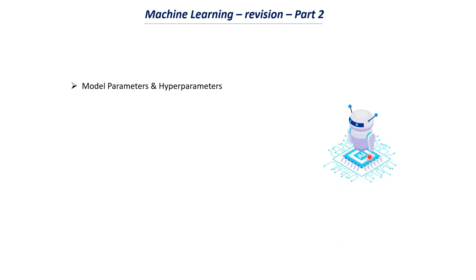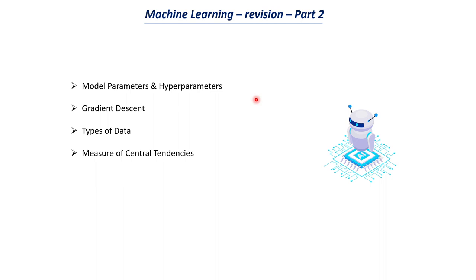The topics we will discuss today include model parameters and hyperparameters — understanding the difference between these two types of parameters — and gradient descent, both very important concepts in machine learning. We will also discuss statistics topics such as types of data, what different types of data we have, and measures of central tendencies.